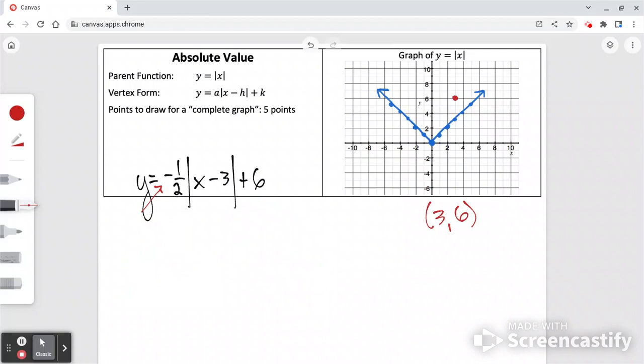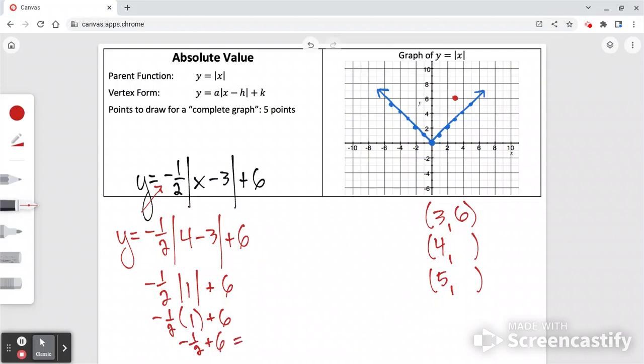To find more points, we already have a point where x is 3. Let's do x is 4 and x is 5. So we'll plug those in for x in the equation. Okay, so here we do inside the brackets first. 4 minus 3 is 1. The absolute value of 1 is 1. That negative on the 1 half wasn't inside the bracket, so that's still negative. So negative 1 half times 1 is negative 1 half, plus 6 gives me negative 5 and a half, or negative 5.5.